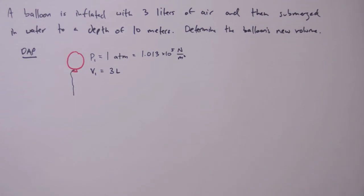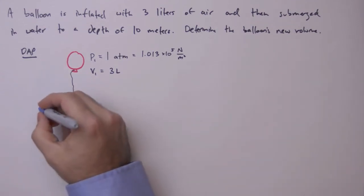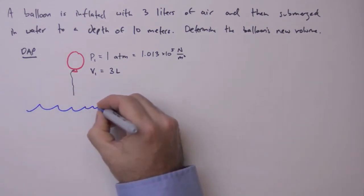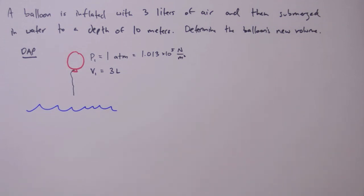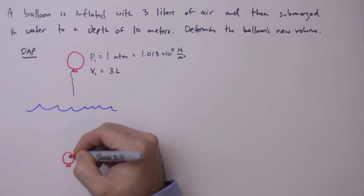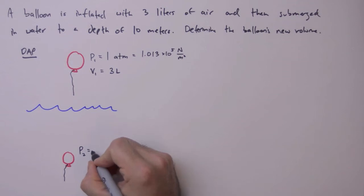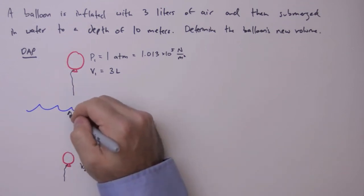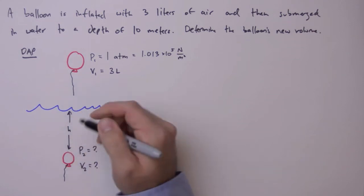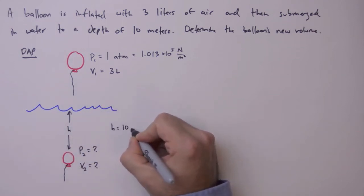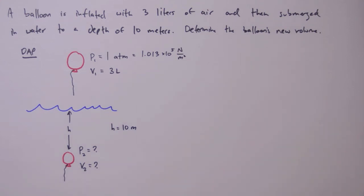We want to know what happens when this balloon is submerged under water. Presumably, it's going to shrink a little bit. We don't know this new pressure, nor do we know the volume, but we do know the depth. So, where do we start?